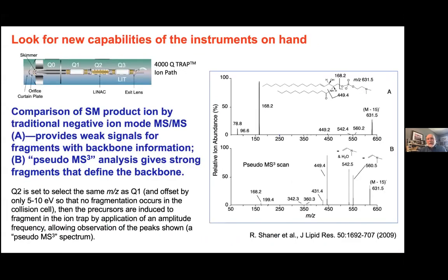You should also play around with the instrument to see how you can squeeze additional capabilities out of it. Cameron Sullard found something quite interesting for sphingomyelins: when using the ABI Q-trap type instrument, by using the second quadrupole as no longer a fragmentation quadrupole but basically a free pass-through quadrupole, ions excited in the electrospray in Q1 have a chance to spontaneously start to decompose while in the ion trap. You're then able to get information about the lipid backbone of the sphingomyelins — which by standard mass spectrometry is often more difficult since sphingomyelins mainly lose the head group.